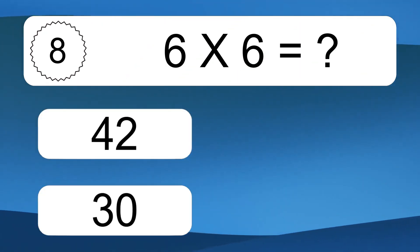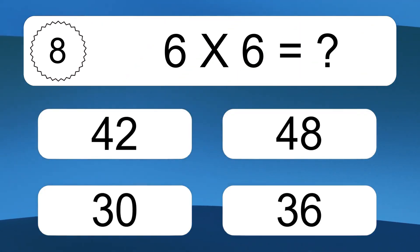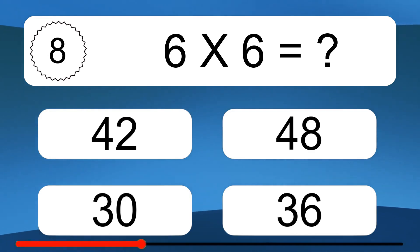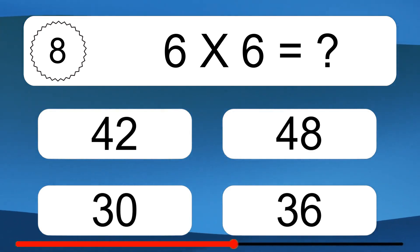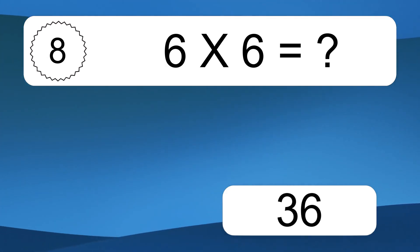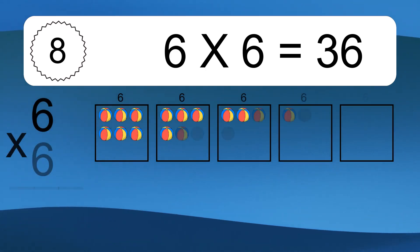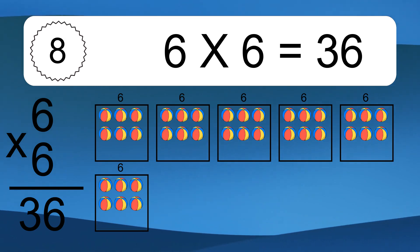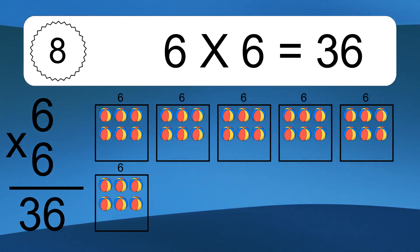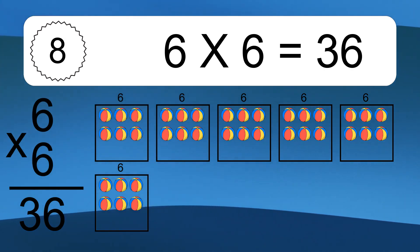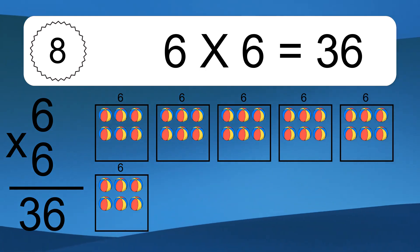6 times 6 equals what? 6 times 6 equals 36. We have 6 boxes, and each box has 6 colorful balls inside. If you count all the balls in all the boxes together, you will have 6 times 6 balls.